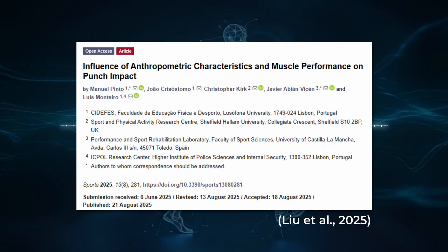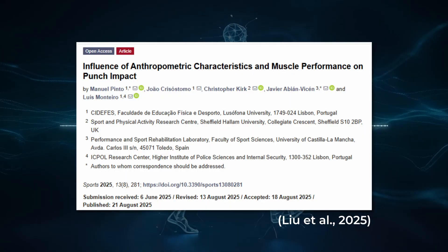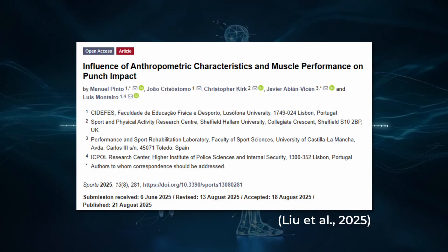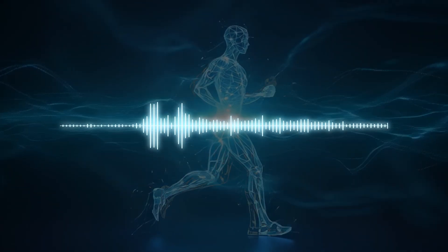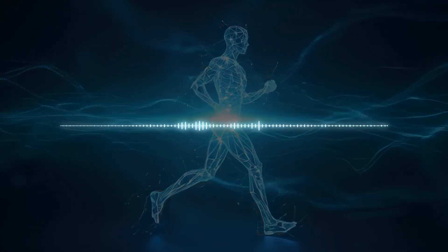This research comes from Influence of Anthropometric Characteristics and Muscle Performance on Punch Impact by Manuel Pinto and colleagues, published in Sports, Volume 13, Issue 8, August 2025. You will find the full link and citation in the show notes. Sports is an open access journal published under the Creative Commons licensing.